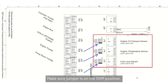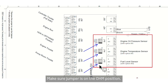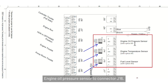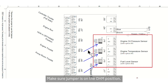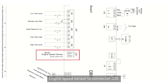Make sure the jumper is on the ohm position. Fuel level sensor (if applicable) to connector J15/J16 — make sure the jumper is on the ohm position. Engine oil pressure sensor to connector J16 — make sure the jumper is on the ohm position. Engine speed sensor to connector J35.